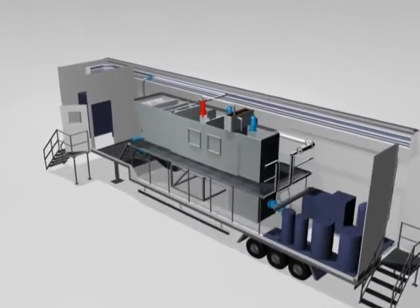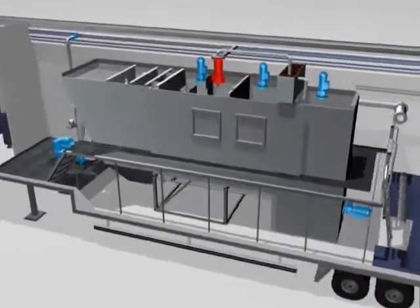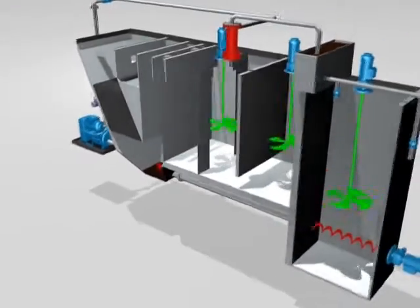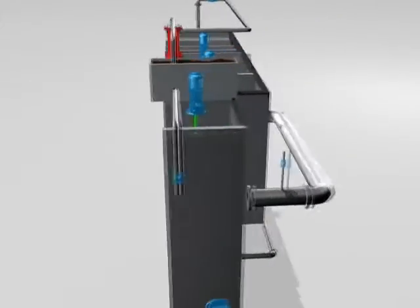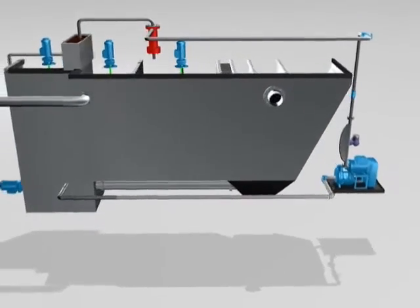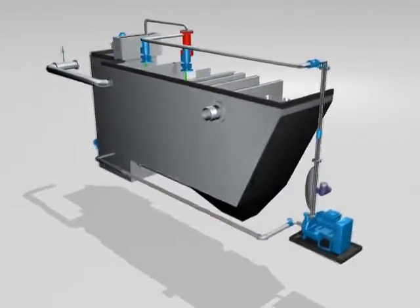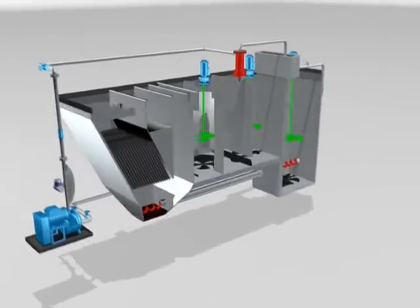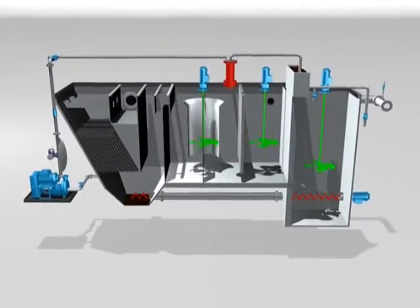The microsand provides surface area for flock formation and acts as a ballast. The resulting microsand ballasted flocks display unique characteristics which allow for clarifier designs with very short retention times, high rise rates, and extremely compact system footprints that are between 5 and 50 times smaller than conventional clarification processes of similar capacity.